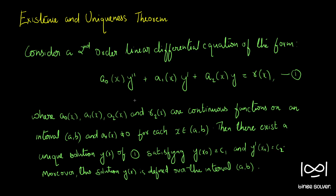So, we have this function defined on interval [a, b], and no values in that interval when substituted should result in a₀(x) = 0 — that is, the y'' term should not vanish. If those two conditions are satisfied, then we can say there exists a unique solution y(x) satisfying y(x₀) = c₁ and y'(x₀) = c₂, where x₀ is a point in [a, b]. That unique solution is defined on the interval [a, b].